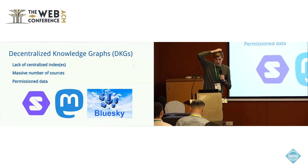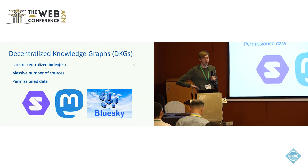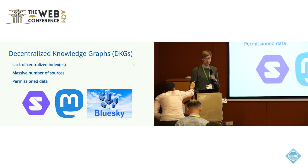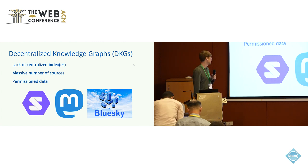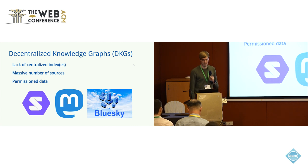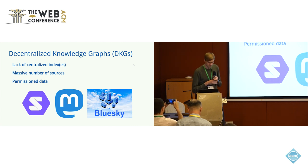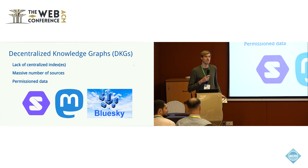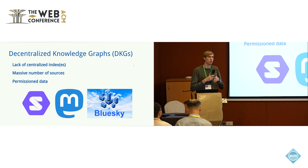In this presentation, I would like to talk about decentralized knowledge graphs, which are knowledge graphs that come to be thanks to initiatives such as SOLID, which was introduced in the presentation before, but also approaches such as Mastodon and Blue Sky, which are alternative decentralization approaches. What is typical of these decentralized knowledge graphs is that there's a clear lack of a centralized index and that they spread data over a massive number of data sources.